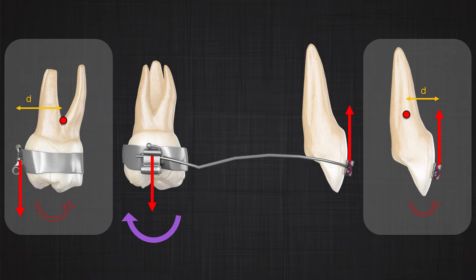A similar effect can be seen in the posterior teeth in the transverse direction. You may get a change in the inclination depending on the inclination of the posterior teeth in the transverse view.